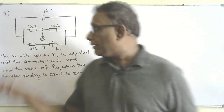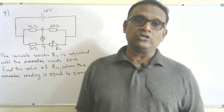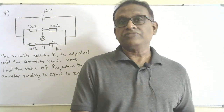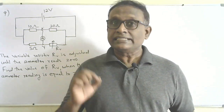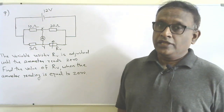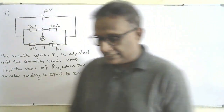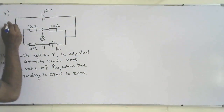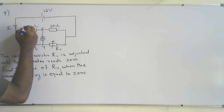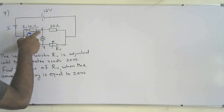When the ammeter reading becomes zero, the potential difference between X and Y is equal to zero. Since V = IR, if I becomes zero then V equals zero. Normally current flows from high potential to low potential. If I consider the current coming out of the cell as I, it can split at junction L as i1 and i2.